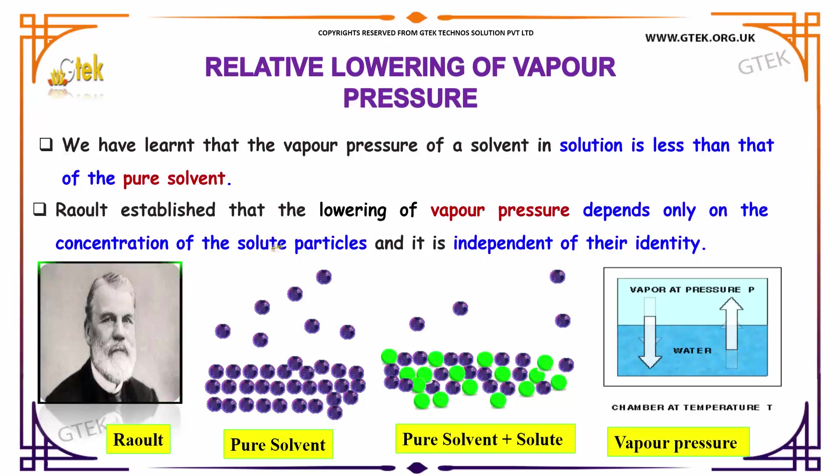Raoult established that the lowering of vapor pressure depends only on the concentration of the solute particles and it is independent of their identity.